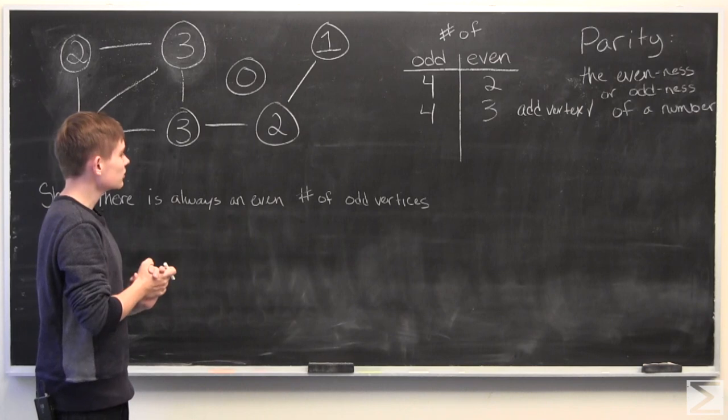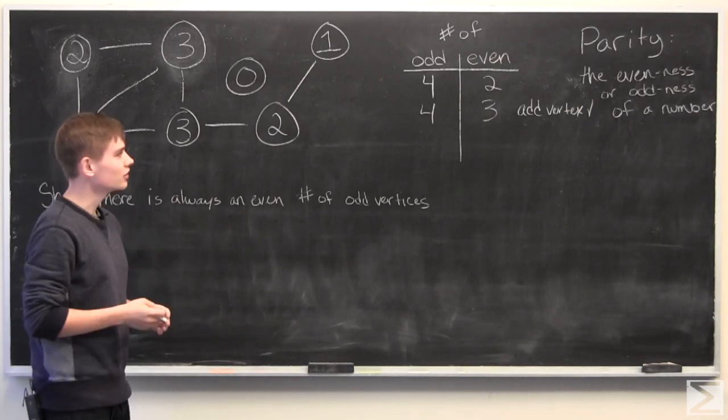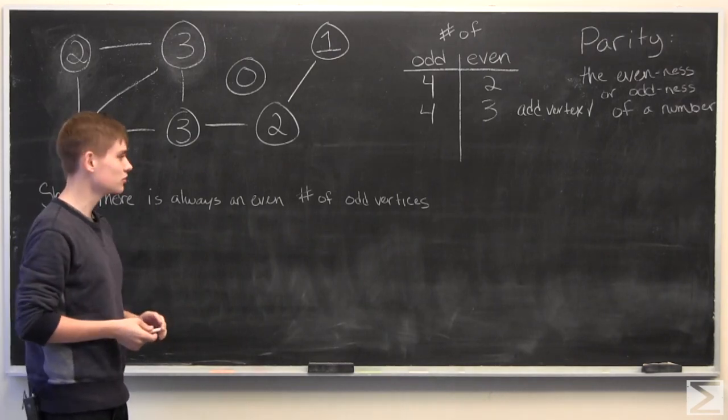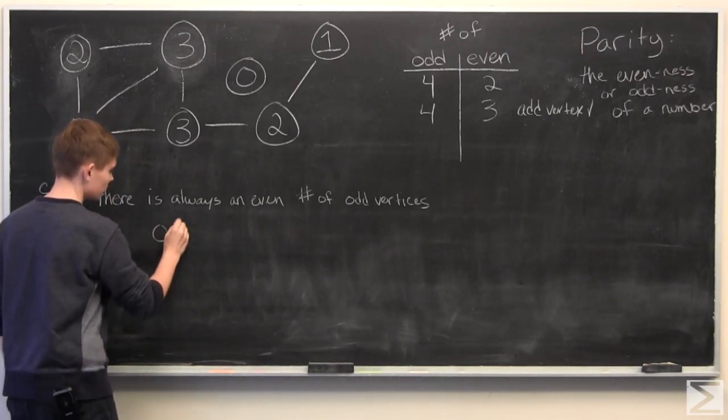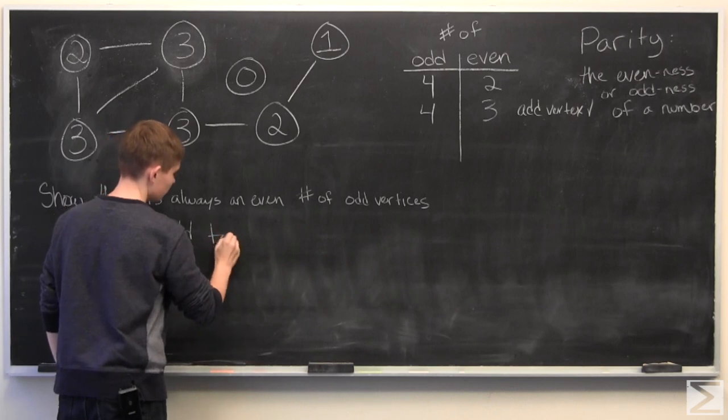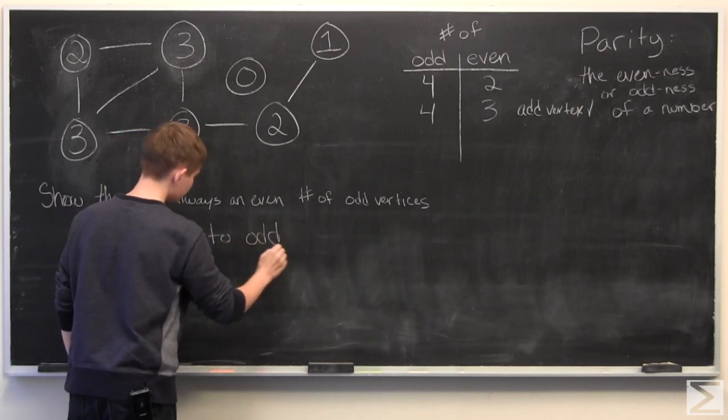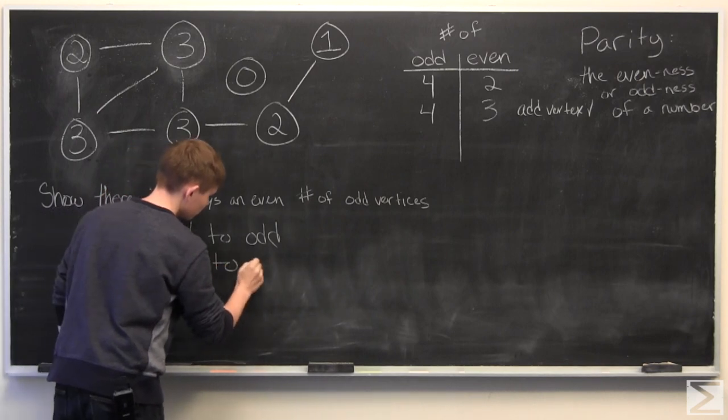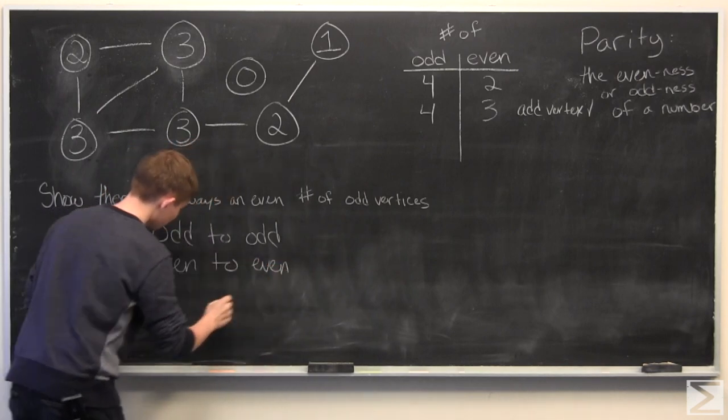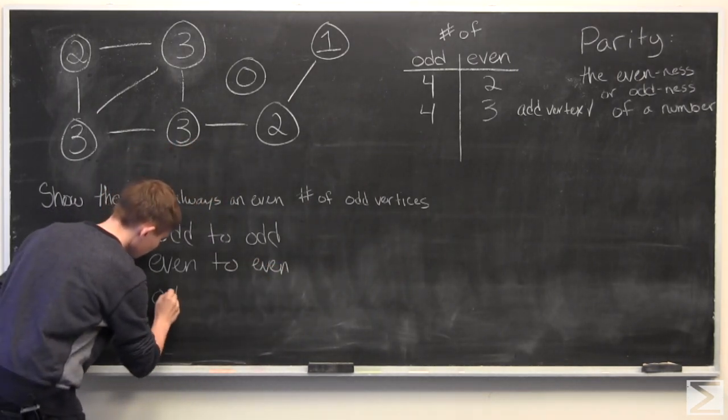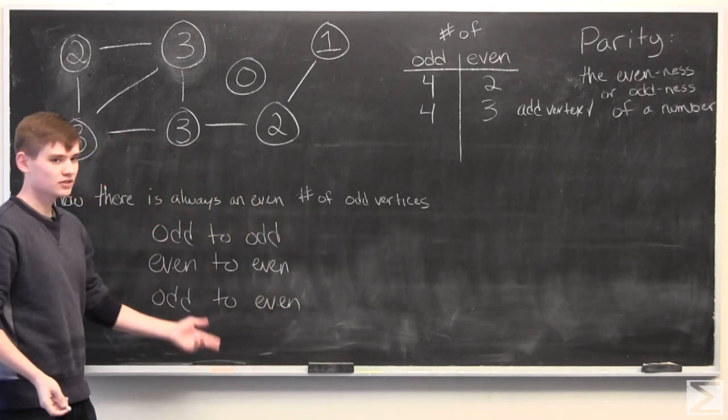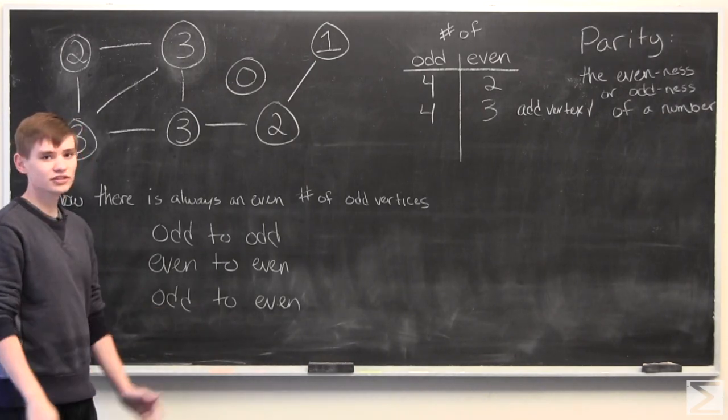Now, the next thing we can do, or the only other thing we can do is to add edges to this graph. And there are three possible ways to do that. We can connect an odd vertex to an odd one, we can go even to even, or we can go odd to even, which is the same as even to odd, since there's no direction in a graph.